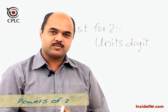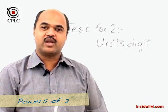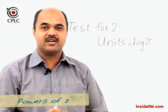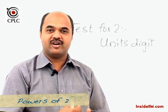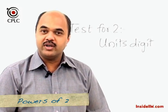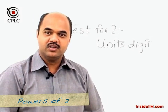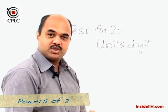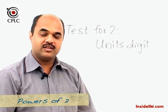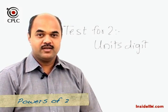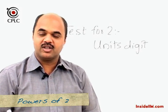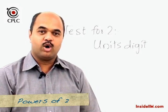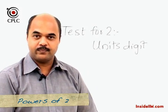While studying divisibility tests, we are also going to have a look at the remainder test, which means how do we find the remainder when a number is divided by two. For two, it is a very simple procedure — if the number is not divisible by two, then the remainder has to be one. So the remainder test for two is very simple: either the number is divisible by two, or the remainder has to be one.